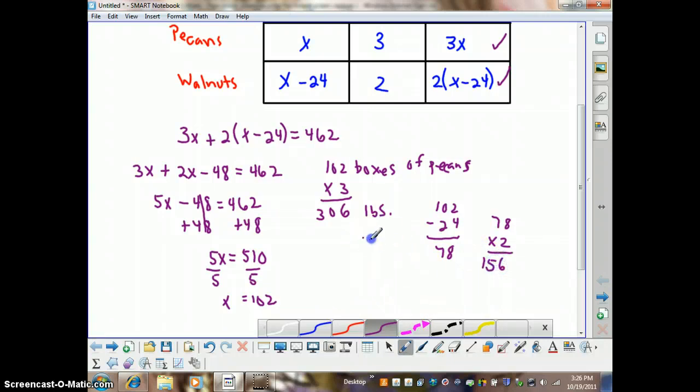And then we can check: is 306 pounds of pecans plus 156 pounds of walnuts equal to our total, which remember was 462 pounds of nuts altogether. And when we check this, we can see that it is 462 pounds of nuts. So our answer is correct, and we have solved the equation.